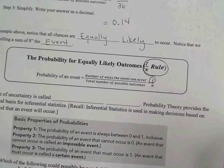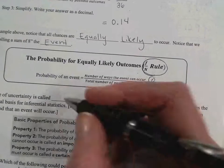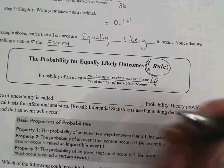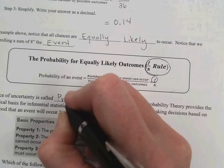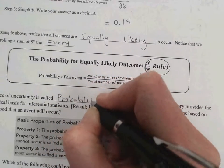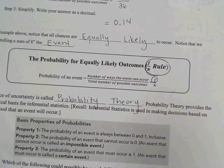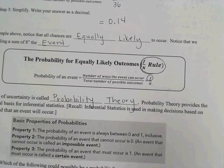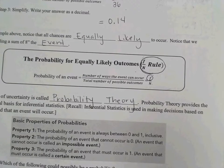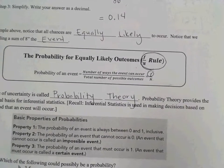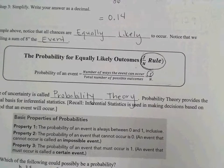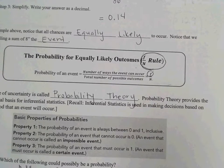The science of uncertainty is called probability theory. Probability theory provides the mathematical basis for inferential statistics. Inferential statistics is something that we've been talking about all year. It's used to make decisions based on the likelihood that an event will occur.